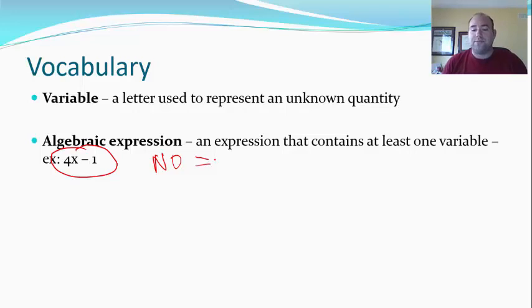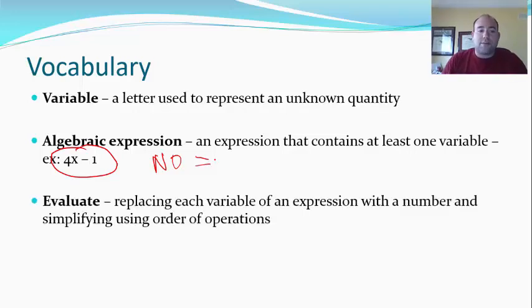Another vocab word from this section is evaluate, and this is a key verb that a lot of students confuse. Evaluate is different than solve. Evaluate means I give you a number, right? We replace each variable of an expression with a number and then simplify using the order of operations. Evaluate is different than solving because there's no equal sign. We only solve equations. So if there's no equal sign, we're not solving anything. That's just a little semantic vocabulary thing that I want you to understand. In this section, there's no solving because there's no equal sign.